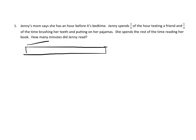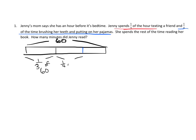We have an hour, so I'm going to label that 60 minutes. We're told she spends a third of her hour texting, so I'm going to estimate and call it right here — one third of the 60 is right there. Then it says she spends a quarter of the time brushing her teeth and putting on her pajamas — I'll put it right there and call that a quarter of 60. She spends the rest of her time reading her book, so that's this piece here.